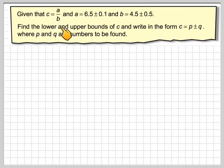Given that c is a divided by b, and a is 6.5 plus or minus 0.1, and b is 4.5 plus or minus 0.5, find the lower and upper bounds of c and write in the form c equals p plus or minus q, where p and q are numbers to be found.